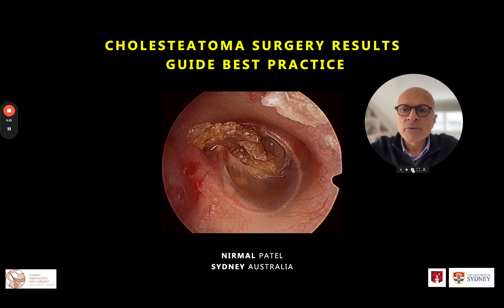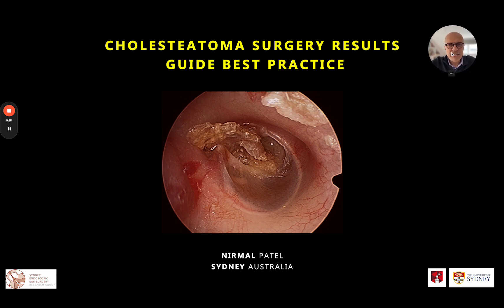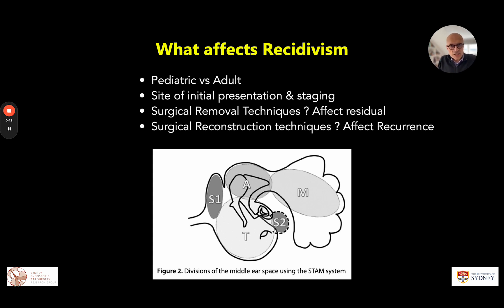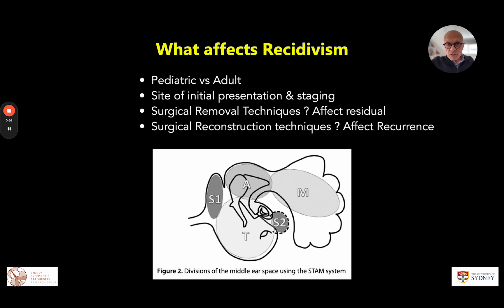I wanted to highlight one specific area to narrow down the question: we're going to be looking specifically at recidivism — residual disease left behind by the surgeon, or recurrent disease that reforms. The classic factors affecting recidivism include the difference between pediatric and adult phenotypes, the site of presentation, and staging. But we specifically wanted to hone in on surgical techniques of removal that might reduce residual disease, and reconstruction techniques that might reduce recurrent disease.